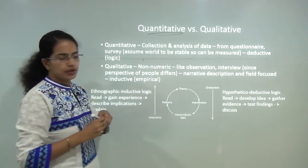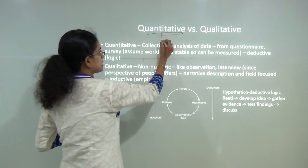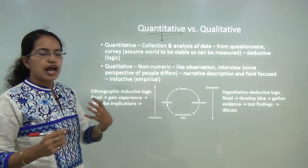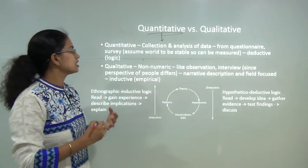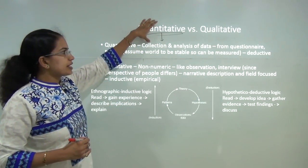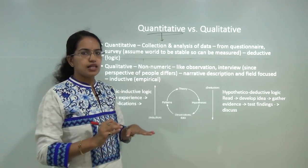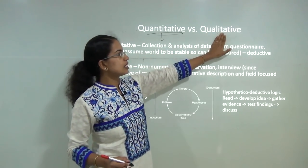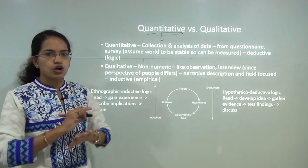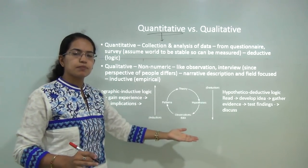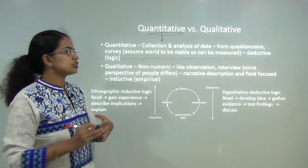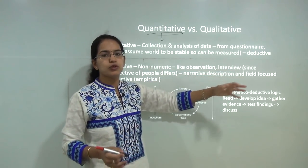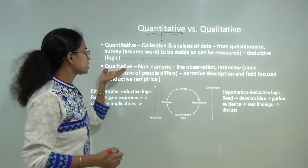The next type is quantitative versus qualitative. Quantitative works with numbers — data collection and analysis are statistically based. Data is mainly obtained through questionnaires, checklists, or surveys. This quantitative method assumes the world is stable and that we can measure or quantify the data. Qualitative data, on the other hand, says the world is unstable and not coherent — every idea of one person differs from another, so we measure through non-numeric ways like observation and interviews. These behavioral techniques come under qualitative assessment.